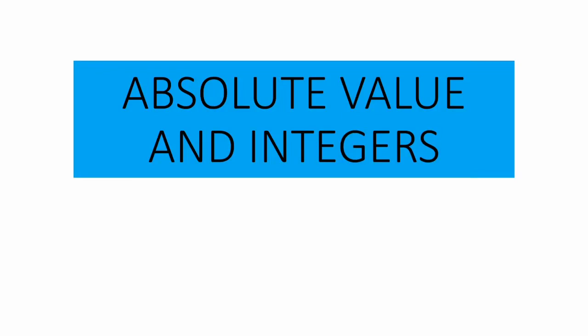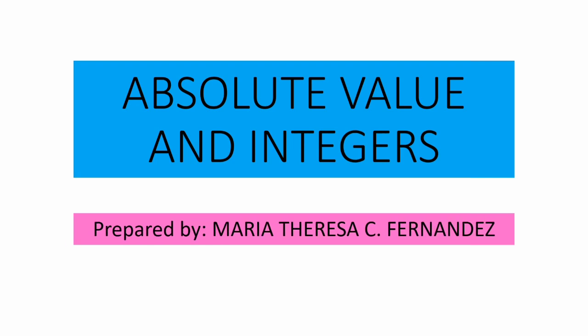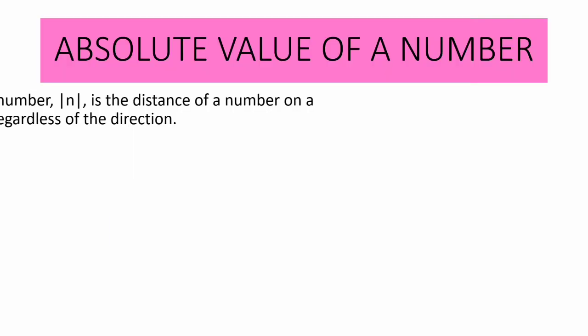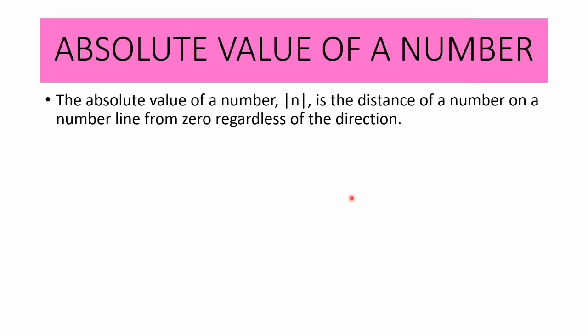Good day to everyone. We will discuss about absolute value and integers. The absolute value of a number, denoted by the symbol, is the distance of a number on a number line from zero, regardless of the direction.